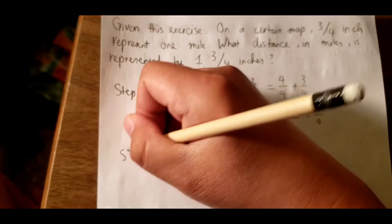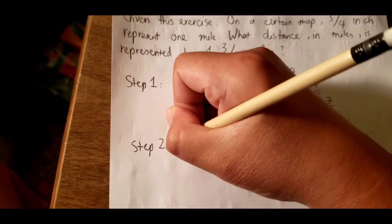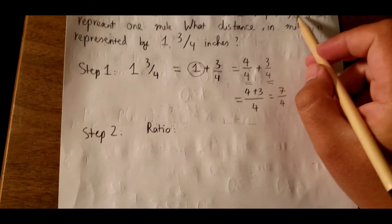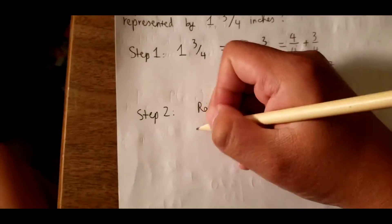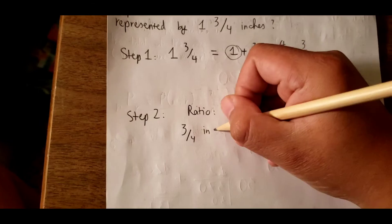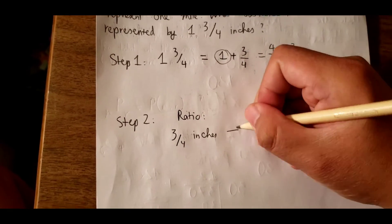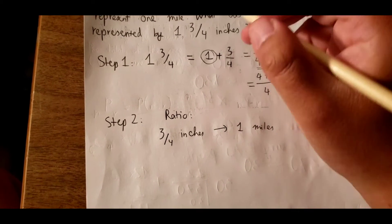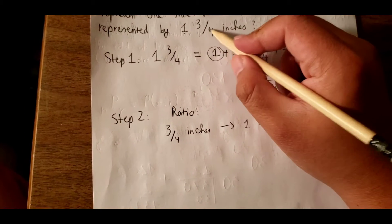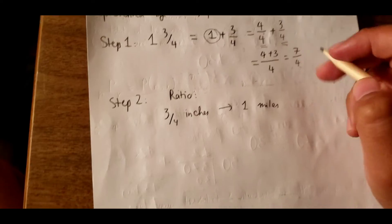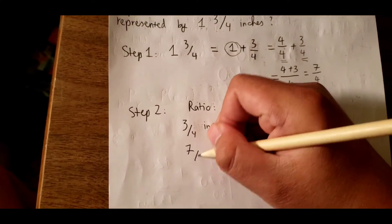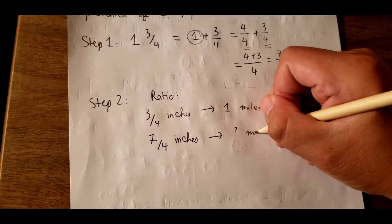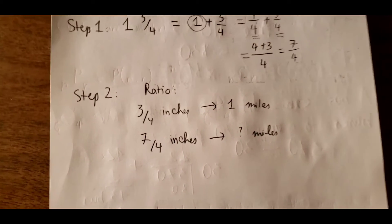Step number 2: we need to put in the ratio. We have 3 over 4 inches, the ratio is 1 mile. And we have 1 plus 3 over 4, we just transformed to 7 over 4 in here, so we have 7 over 4 inches.